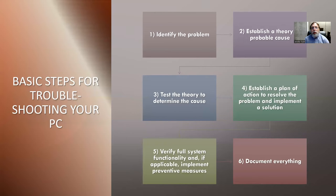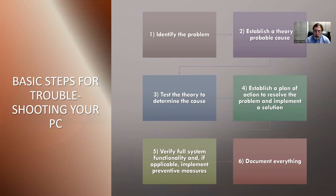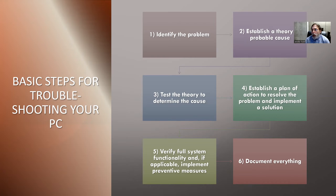There are six basic steps to troubleshooting. First, we're going to identify the problem. Then we're going to establish a theory of probable causes — basically what can cause this to happen. Then we're going to test those theories to determine if any of them are the actual cause of the problem. If none of the ones we established in step two turn out to be true, we go back to step two. Once we figure out the cause, we establish a plan to resolve the problem and implement the solution.